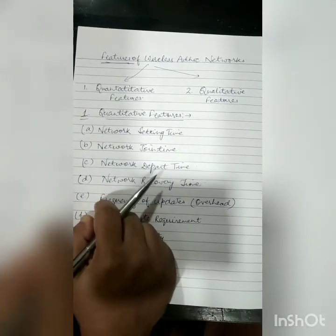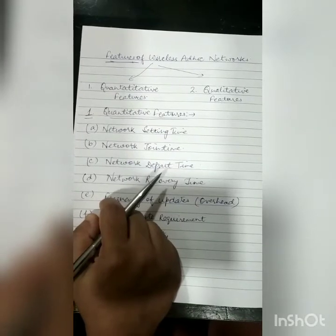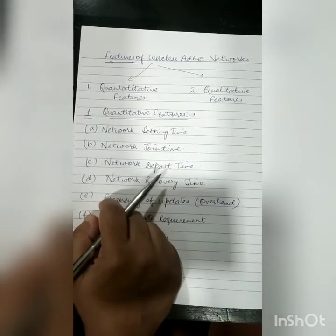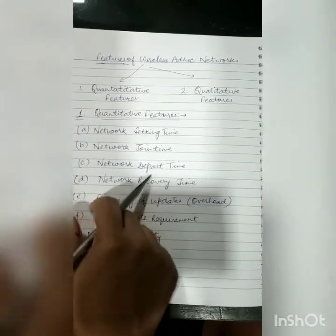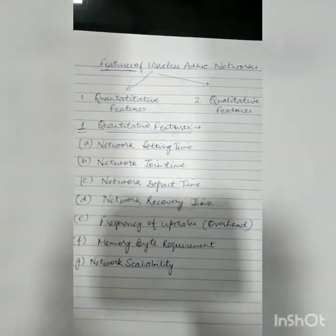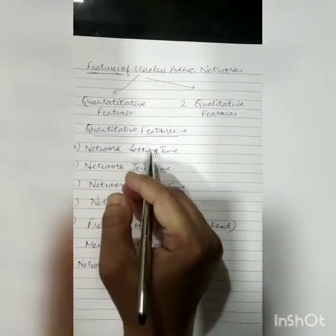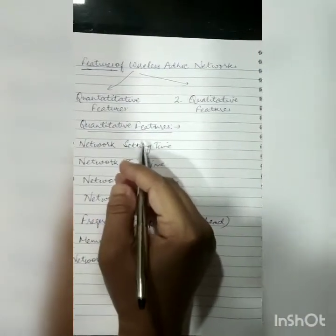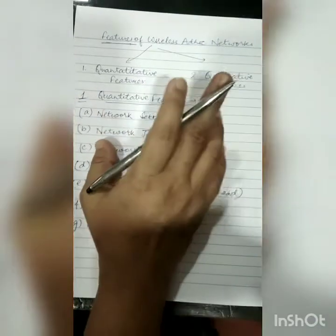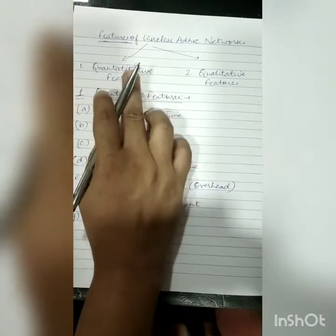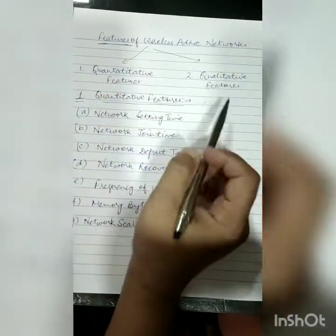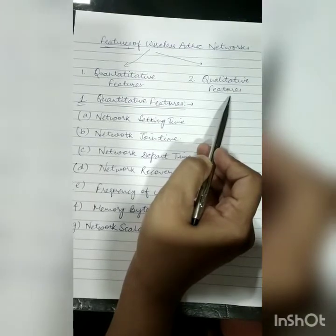In today's lecture, I will be talking about the features of the wireless ad hoc networks. Regardless of the application, there are certain critical features that can determine the efficiency and effectiveness of wireless ad hoc networks. These features are categorized into two types: quantitative features and qualitative features.